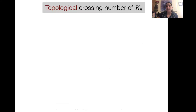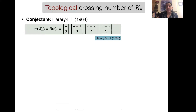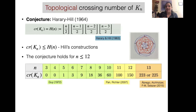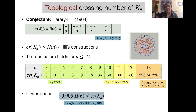For topological drawings, our focus is on complete graphs. In 1964, Harari and Hill conjectured that the exact crossing number of the complete graph is given by this quartic formula. The formula comes from Anthony Hill's construction shown on the right, and there are only a few values of n for which the conjecture has been proved, so this is a very open problem. The best bounds that are known have seen a lot of activity lately.